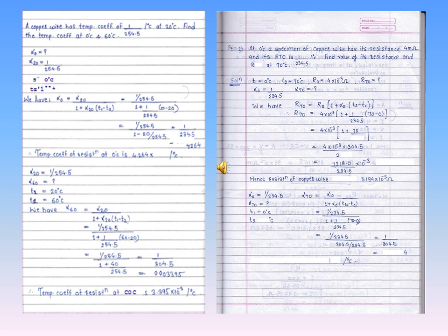Let's get started with the numericals on RTC. Here is a typical numerical: a copper wire has a temperature coefficient of 1/54.5 per degree centigrade at 20°C. Find the temperature coefficient at 0°C and 60°C. We use the formula alpha(T) = alpha0 / (1 + alpha0 × T) to first find alpha0, and then find alpha at 60°C.